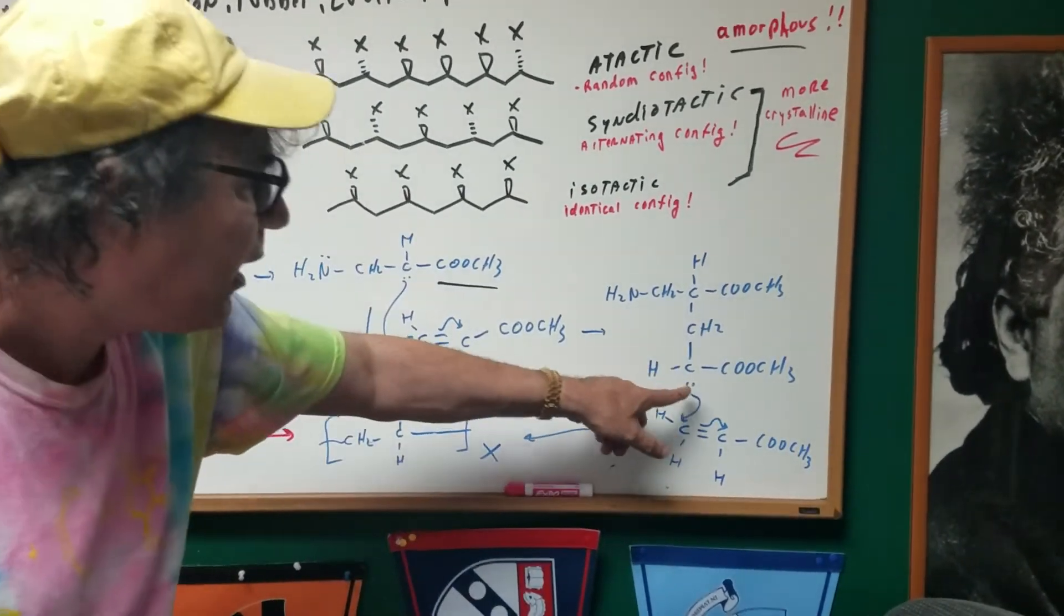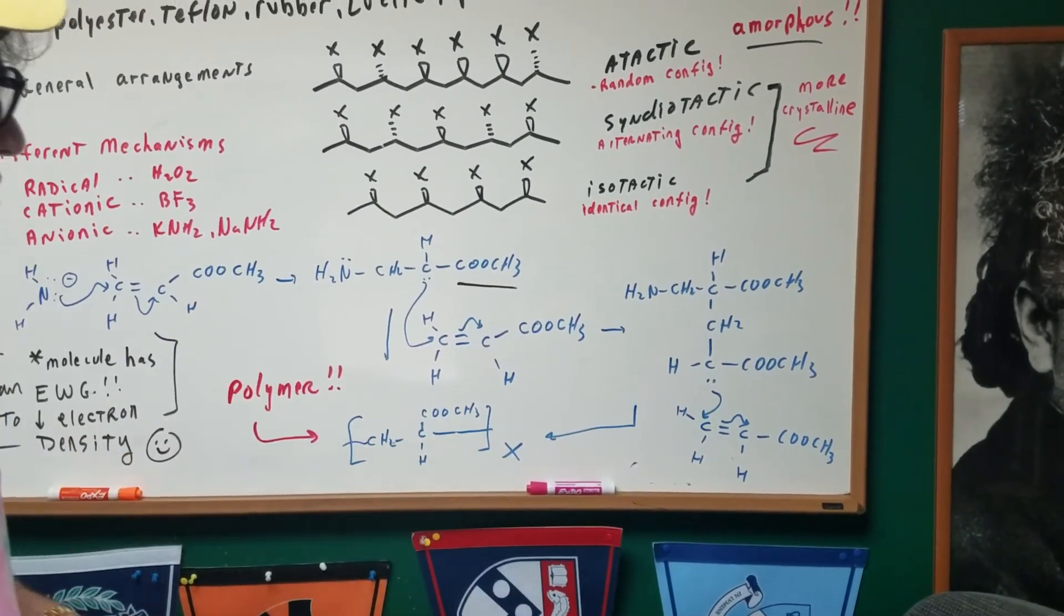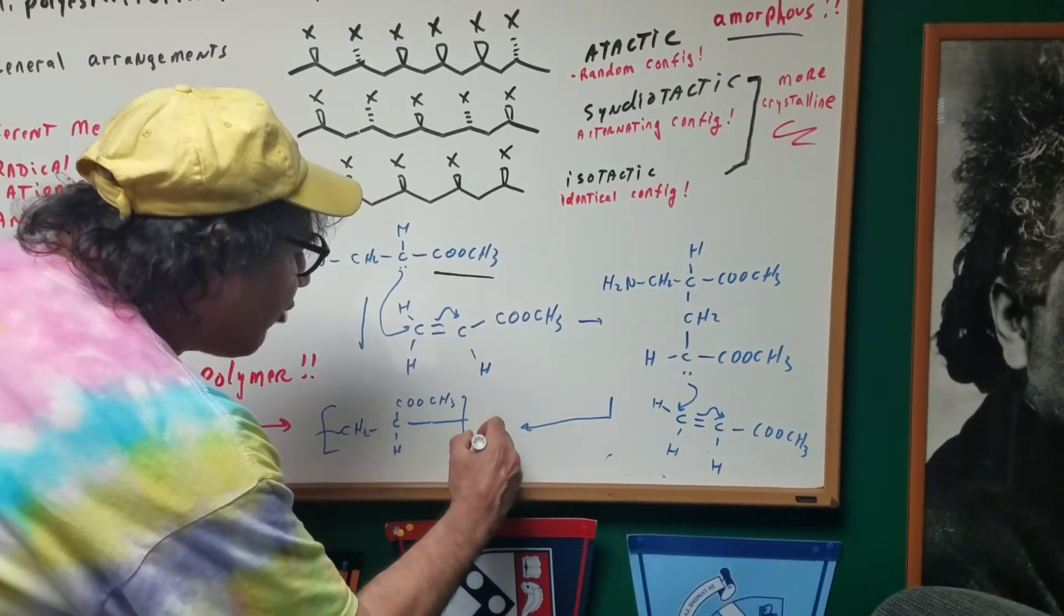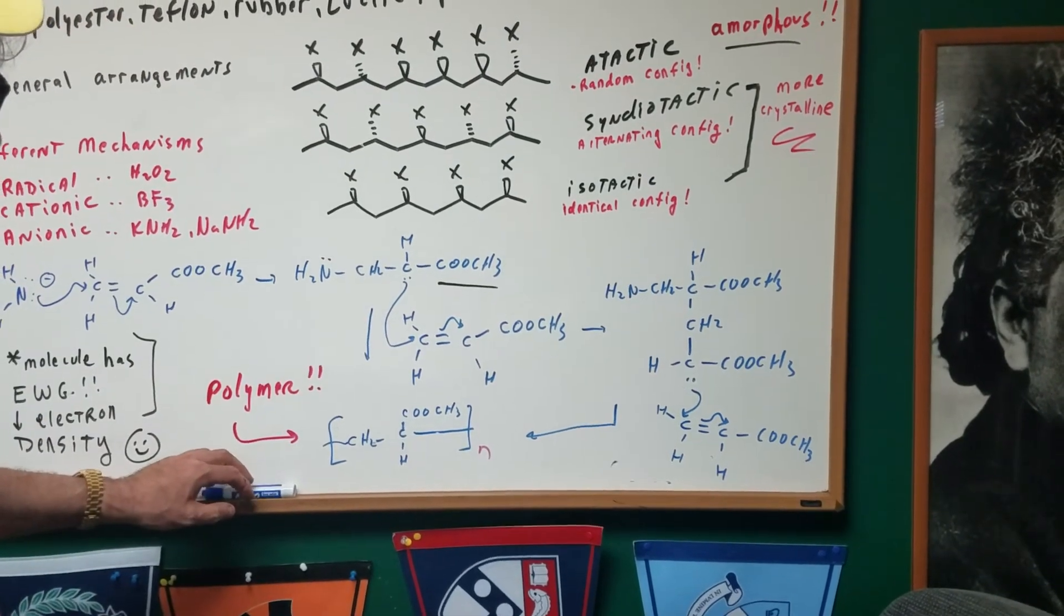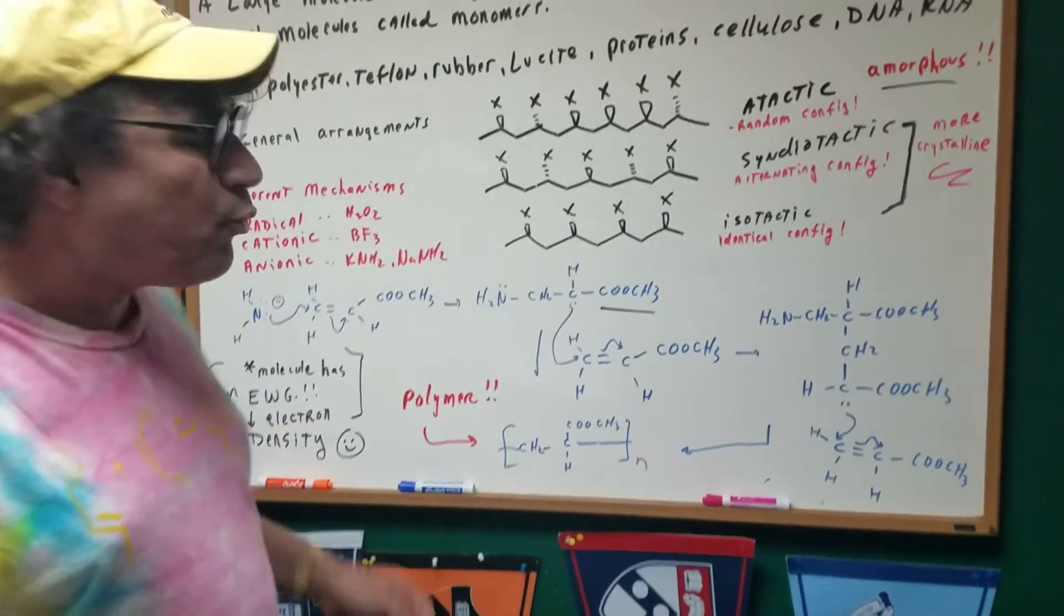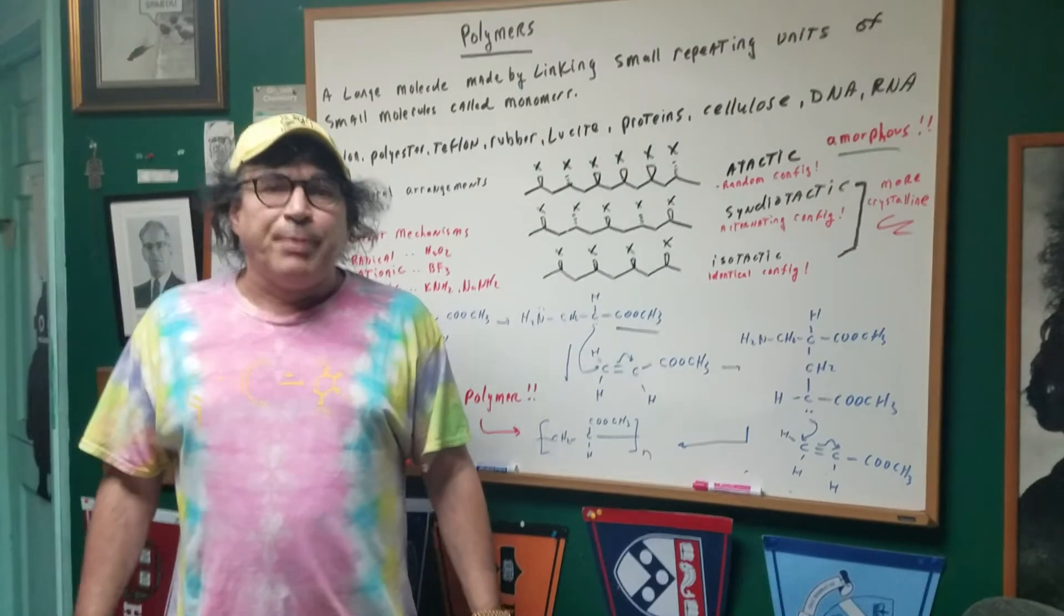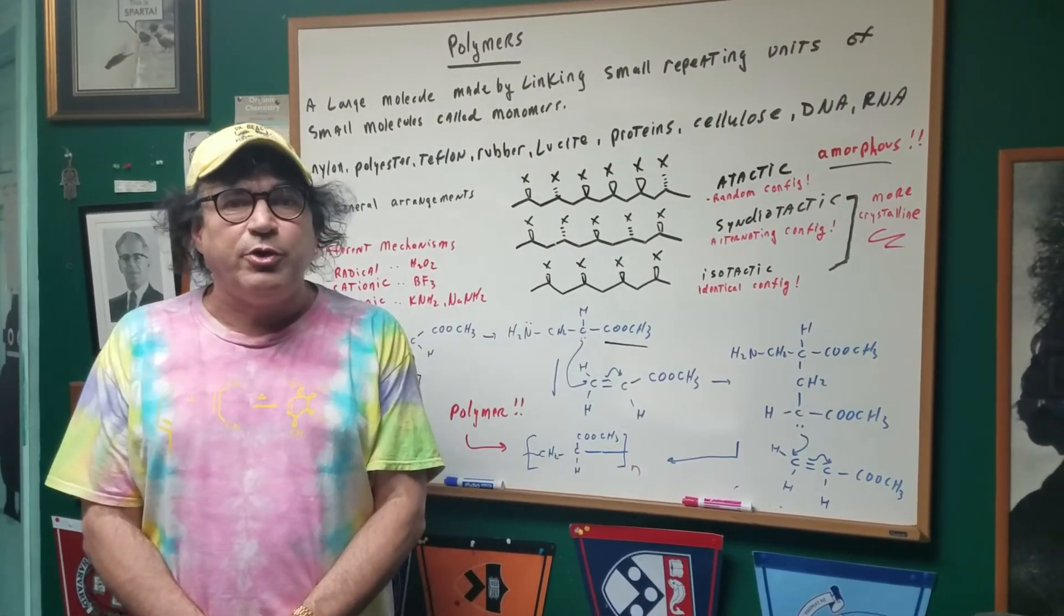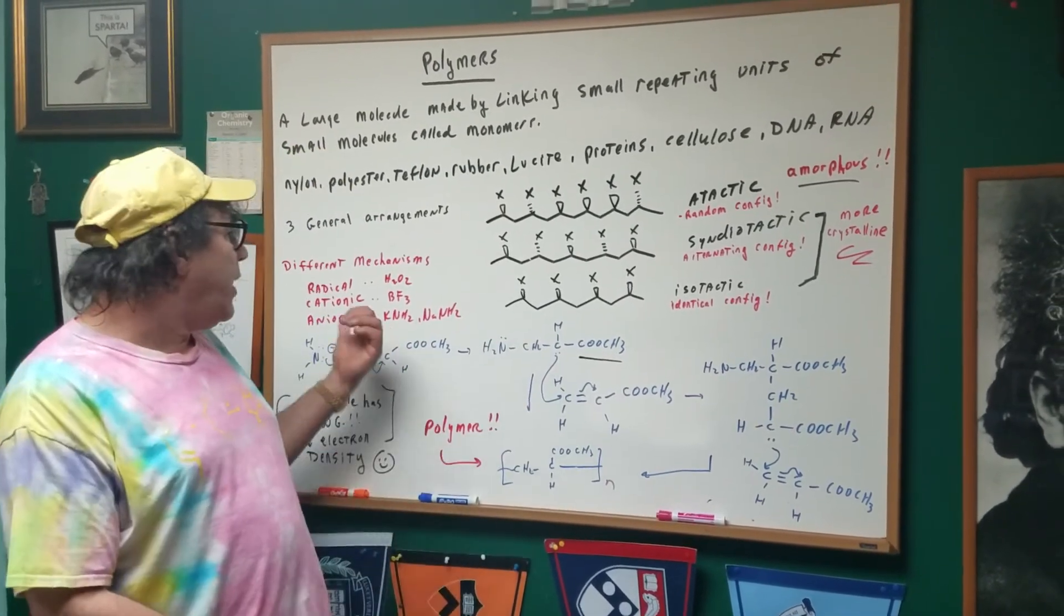And then it goes on, and we attack another molecule, and we repeat this many, many times. Here, I put an X. Normally, we put a little n, so I'll change that. So, we're going to repeat this thousands and thousands of times, and we get what's called a polymer. In the next clips, I'll show you how to do one of the other mechanisms, either radical or cationic. But, as you can see, this was a good example of how I did an anionic polymerization using potassium or sodium amide ion.